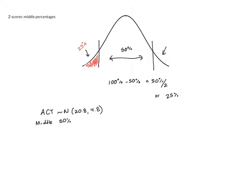For this example, remember the ACT scores are normally distributed, average of 20.8, standard deviation of 4.8, and what we want to know is the middle 50% of ACT scores are between what two numbers.